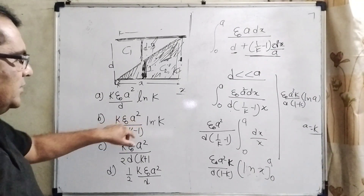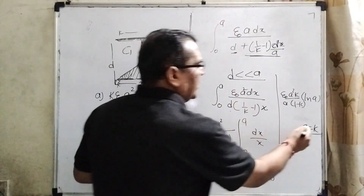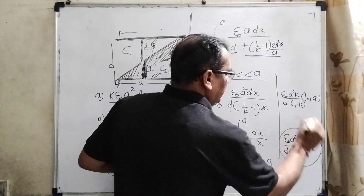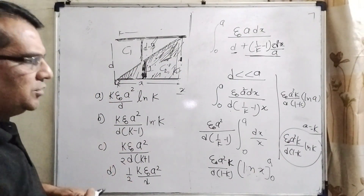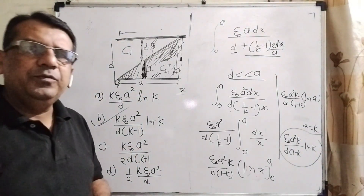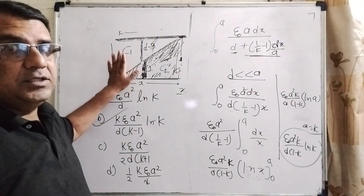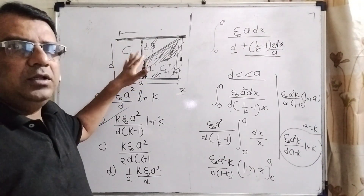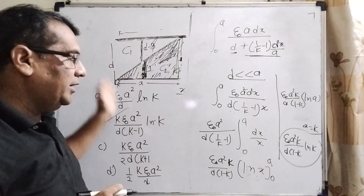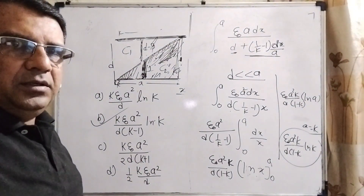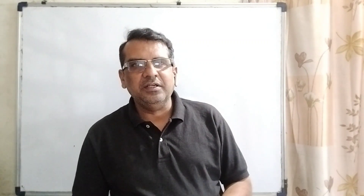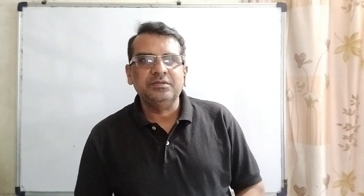So here option D is the correct answer. I hope you understand this question. In my opinion, this is a different type of question among all dielectric constant problems — a triangular dielectric configuration is quite unique. It is a very good question for practice. Thank you for staying till the end of the video, and don't forget to subscribe to my channel to get the link for the next video. Thank you, take care, and bye bye.